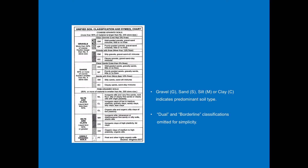Here is the Unified Soil Classification System chart — it's good to know because you'll see these initials on your plans. GW is well-graded gravel, GP is poorly-graded gravel, GM, GC — same goes for sand. Getting down into silts and clays, you'll see L's and H's for low plasticity and high plasticity. If you need to know more about this, take our grade and drain class, which goes way more into depth and is actually a prerequisite for this class in person.